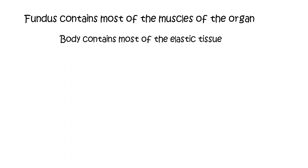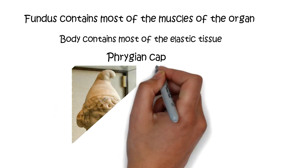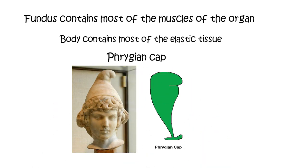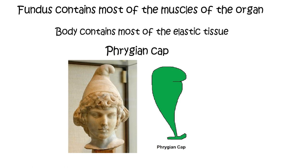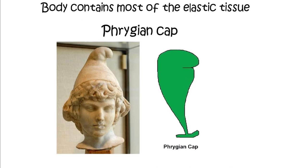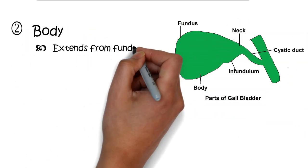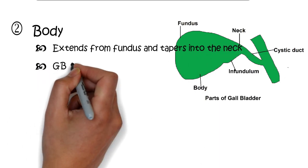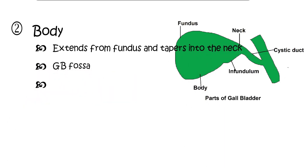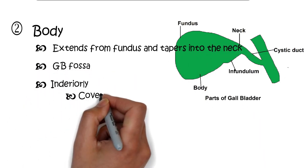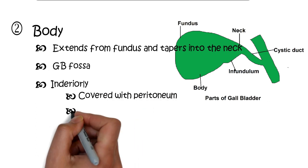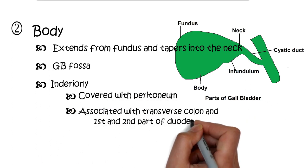The fundus is entirely covered with peritoneum. The Phrygian cap is the folding of the fundus back upon the gallbladder body, derived from the liberty cap — a soft conical cap with an apex point associated with antiquity and people of Eastern Europe and Anatolia. The body of the gallbladder extends from the fundus and tapers into the neck. It lies in the gallbladder fossa, is covered inferiorly with peritoneum, and is related to the transverse colon and the first and second parts of the duodenum.